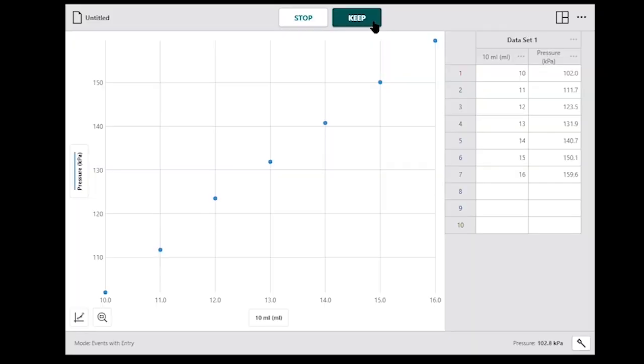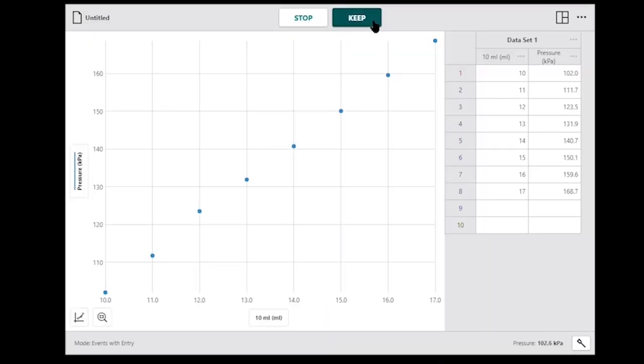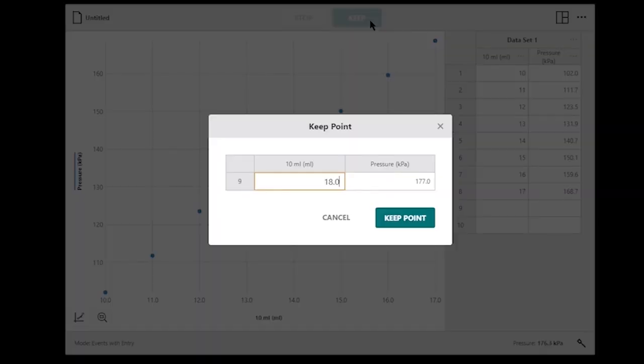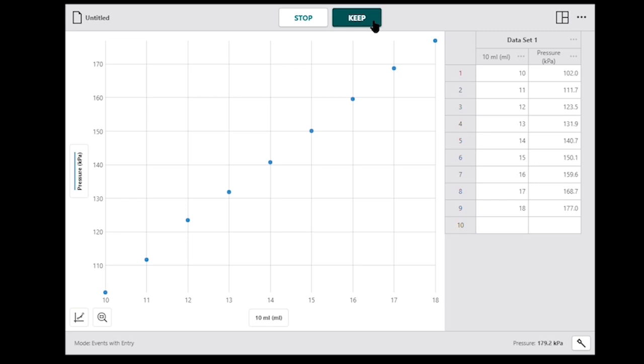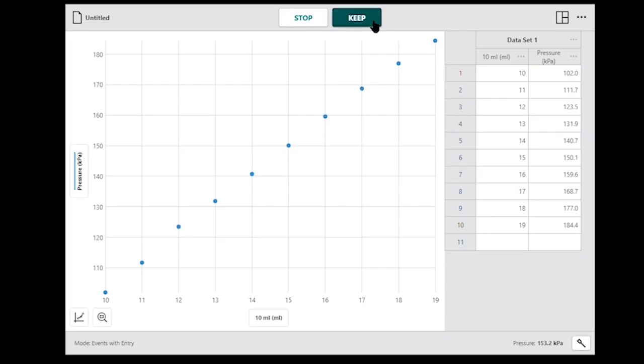With the syringe open to air, set it to an initial volume, which is recorded in the Vernier software. Connect the syringe to the pressure sensor, changing the volume to 10 mils so the volume is constant and measure the pressure.